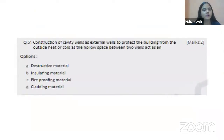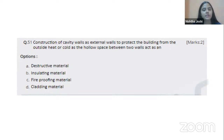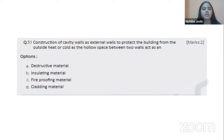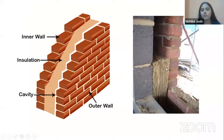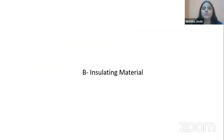The question asks: construction of cavity walls as external walls to protect the building from outside heat or cold — what does the hollow space between two walls act as? The options are destructive material, insulating material, fireproofing, and cladding. When material is placed between two walls creating a cavity or gap, it insulates the building from outside conditions. Images show two walls with insulatory material between them — this is a cavity wall. The right answer is B, insulating material.